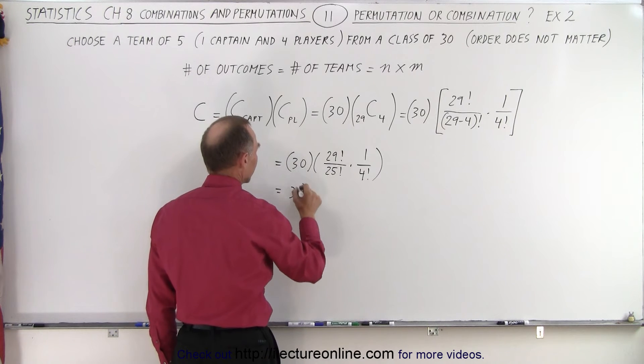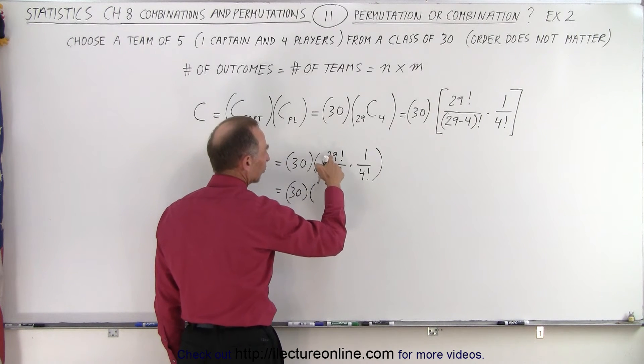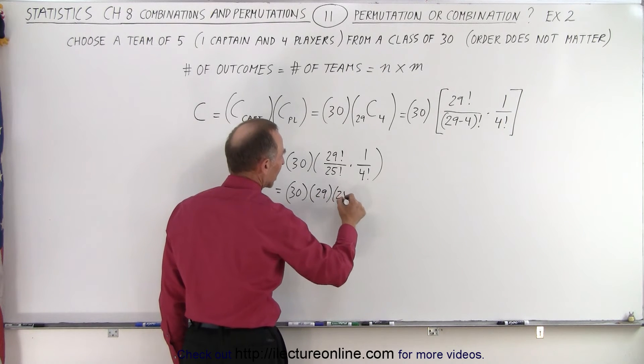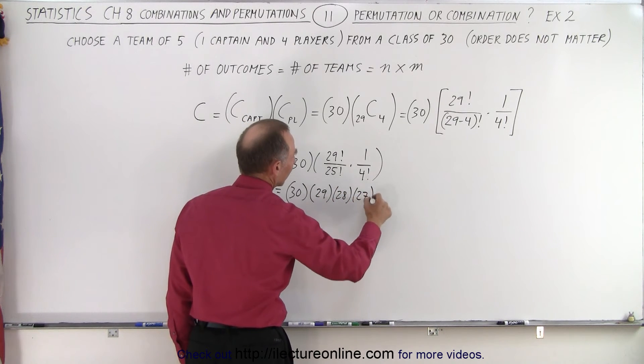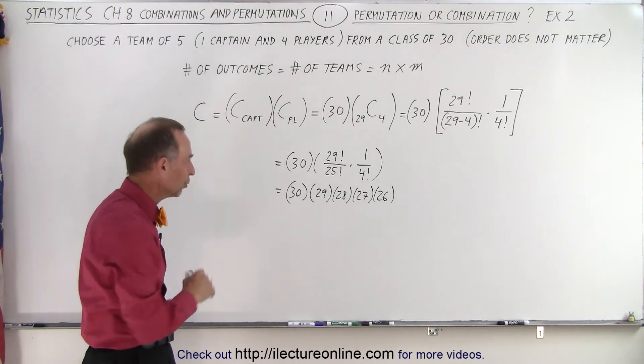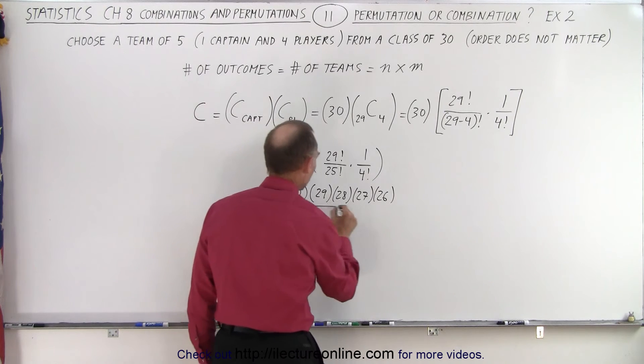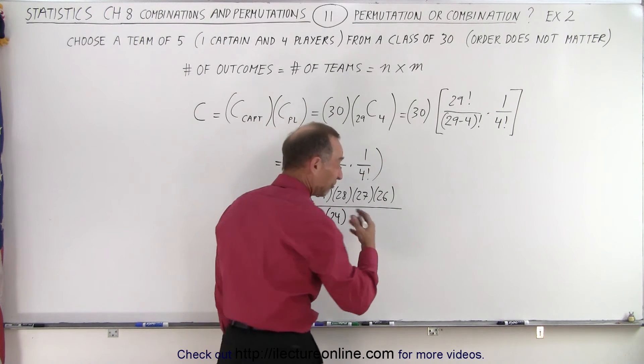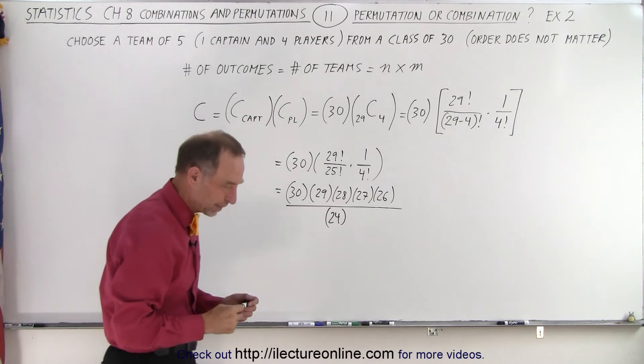So this is equal to 30 times 29 factorial divided by 25 factorial, which is 29 times 28 times 27 times 26, because 25 and below cancels out between the denominator. And then we take the whole thing divided by 4 factorial, which is equal to 24, because that's 4 times 3 times 2 times 1.